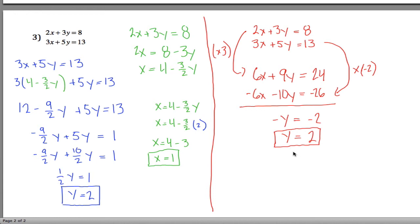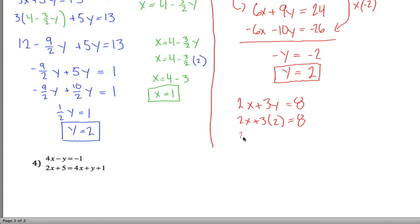Now take any equation above and change all the y's into 2. Let's take the very top equation: 2x plus 3y equals 8, rewritten as 2x plus 3 times 2 equals 8. 3 times 2 is 6, so 2x plus 6 equals 8. Subtract 6 from both sides and 2x equals 2, so x equals 1 if you divide both sides by 2. We end up with the same answer: x equals 1, y equals 2.